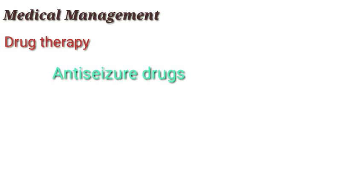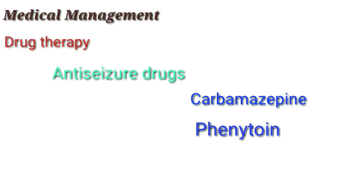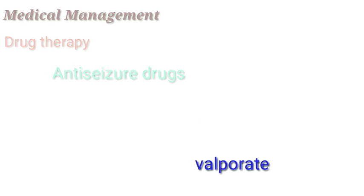Medical management includes drug therapy using anti-seizure drugs such as carbamazepine, phenytoin, and valproate. These are used because the condition is nerve-related. The drug of choice is carbamazepine. The second option is conservative therapy involving nerve blocking with local anesthetics.